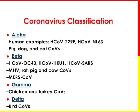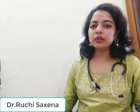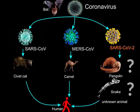Some common human coronaviruses are: 229E (alpha), NL63 (alpha), HKU1 (beta), and OC43 (beta). These are common human coronaviruses causing the common cold. The more severe ones are MERS, SARS, and SARS coronavirus 2.